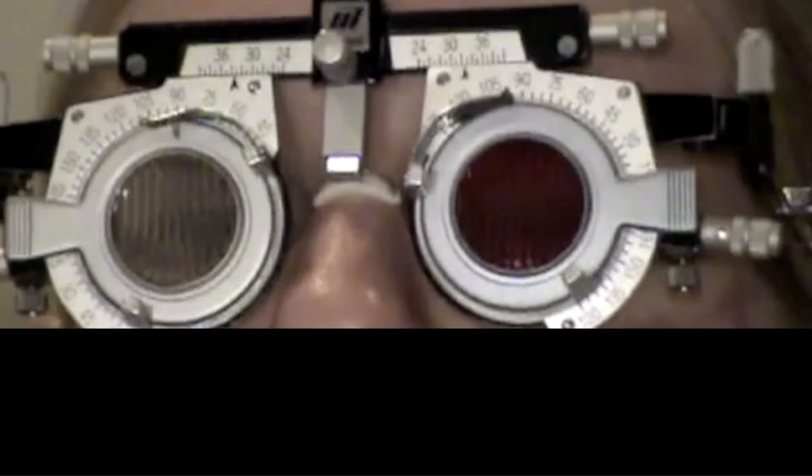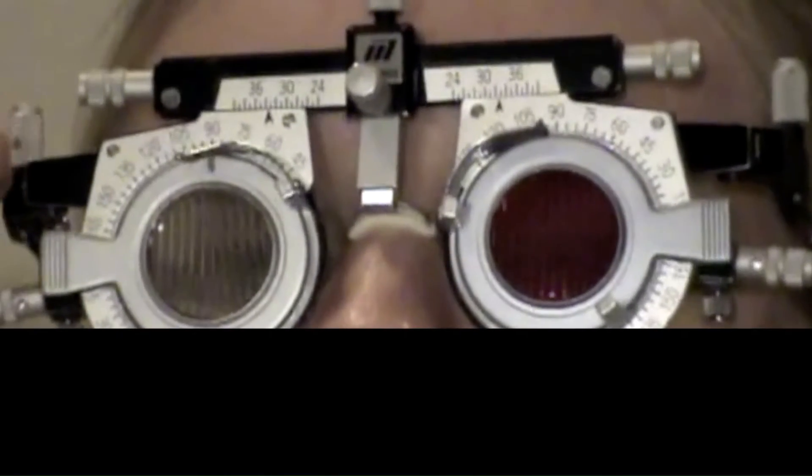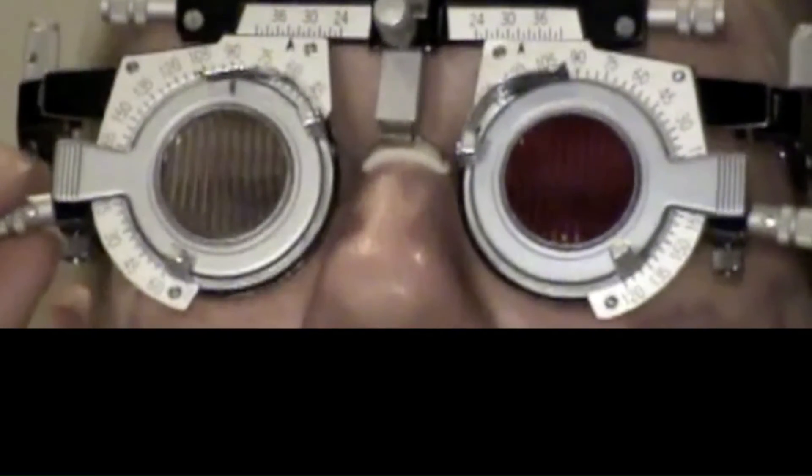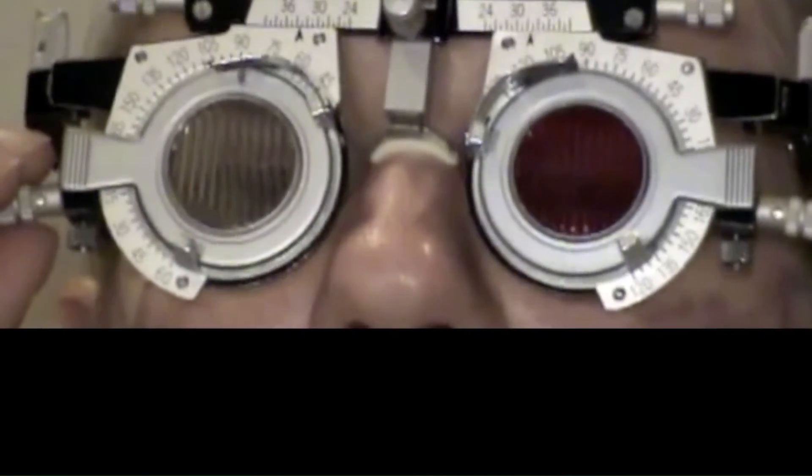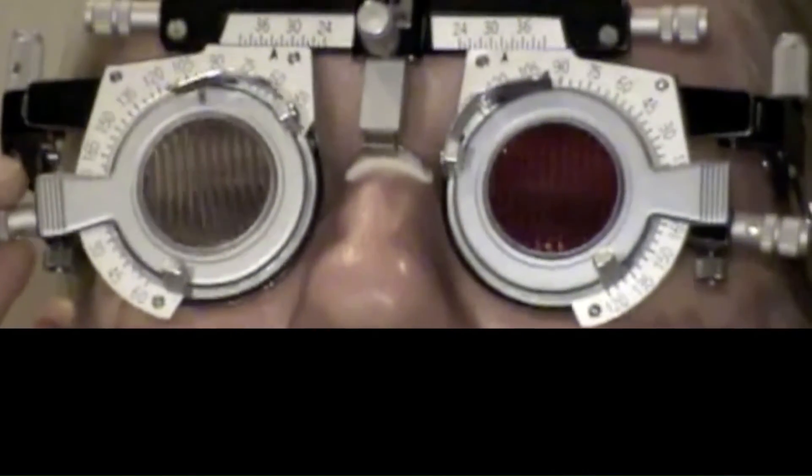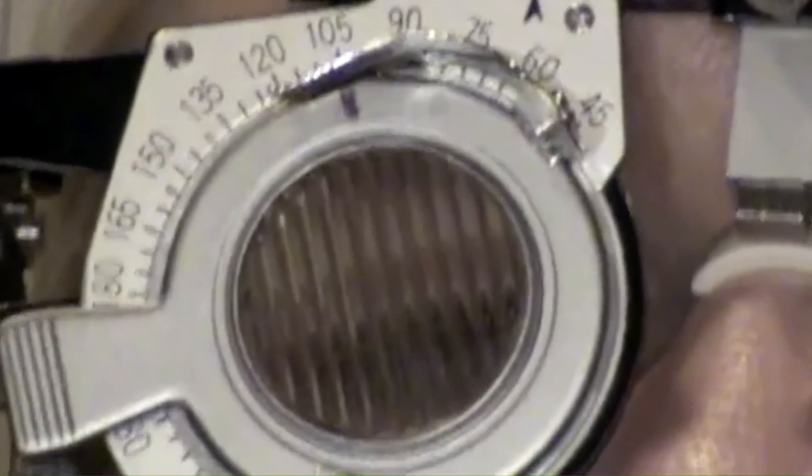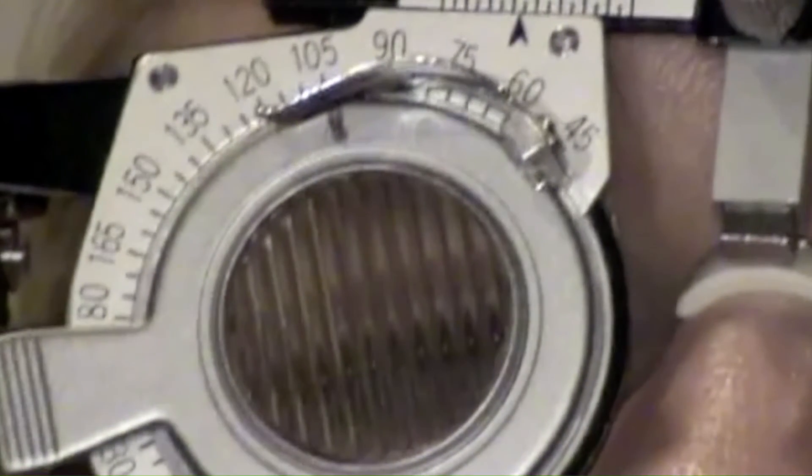This patient has bilateral fourth cranial nerve palsies, which create a large ex-cyclo deviation. With the two Maddox rods placed vertically, she sees one image as tilted. She has been instructed to turn the dial on the right spectacle until the two lines are parallel. She turns it to 15 degrees off the vertical meridian. Now she sees the two lines as parallel.